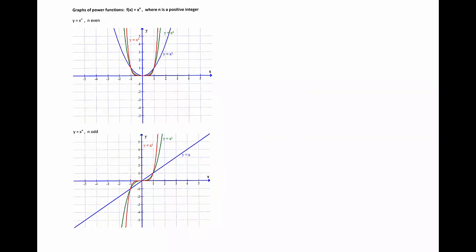The power function is a function of the form f(x) = x^n where n is a positive integer. These functions can be graphed like all basic functions by plotting points. You can easily check that the points (1,1) and (0,0) are on the graph of such a function.